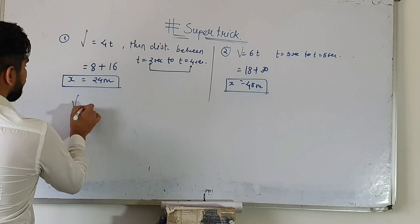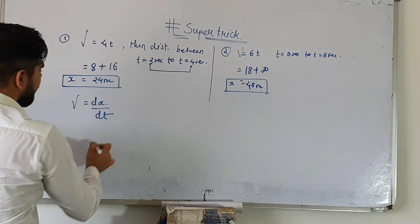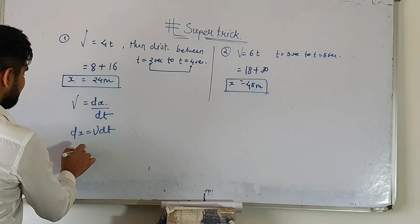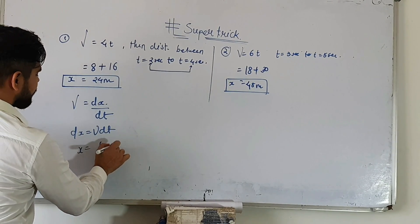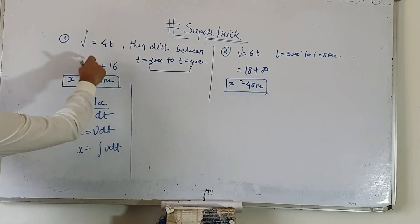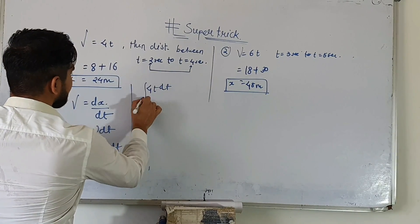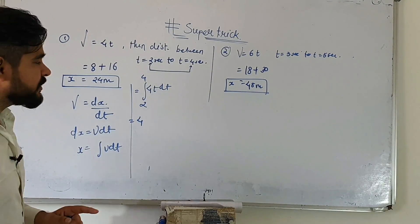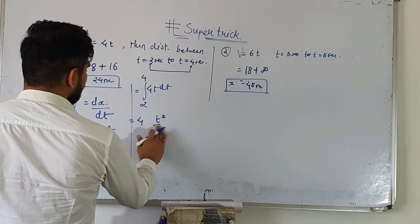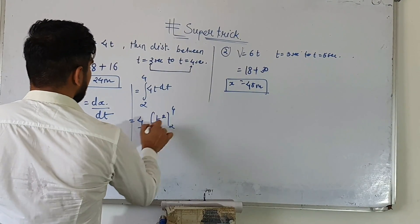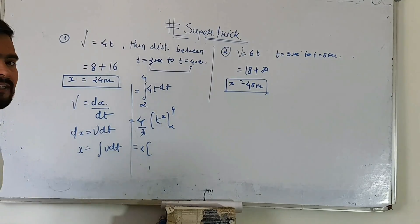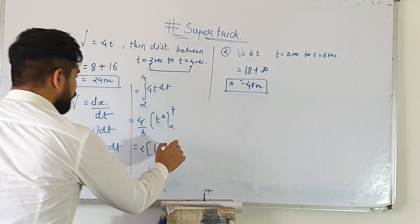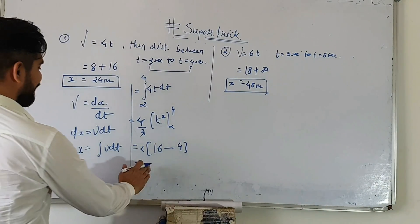Look, first of all you will know V and X, that is dx by dt. We know that dx is equal to V dt. So how to find X from V dt? Simple — you have to use integration. We will write the integral of 4t dt. What is the limit? 2 to 4. 4 goes out, and we integrate t dt. So we get 16 minus 4, that is 12, times 2 — equals 24 meters.